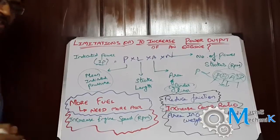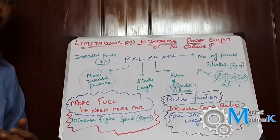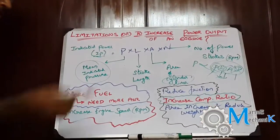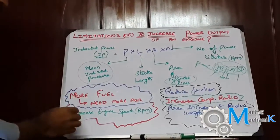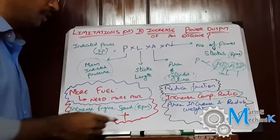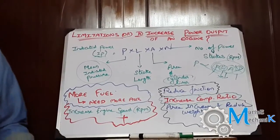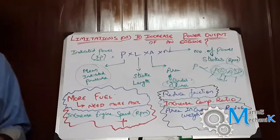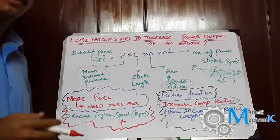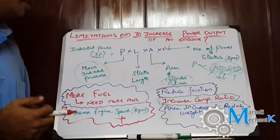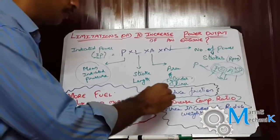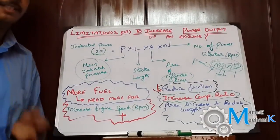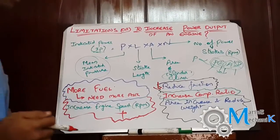If I put more fuel, I get more power — that's straightforward. However, to burn more fuel I need more air. Increasing engine speed is a design constraint, so we cannot do that. We can also reduce friction: tribology and lube oil characteristics have improved over decades, reducing the coefficient of friction, lowering friction losses, and thus increasing engine efficiency.